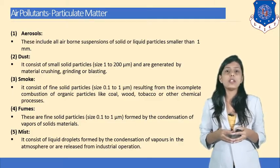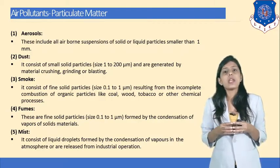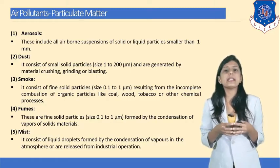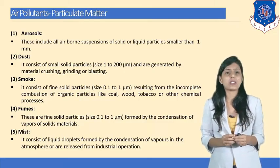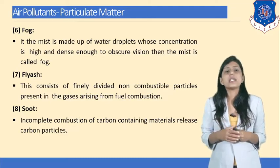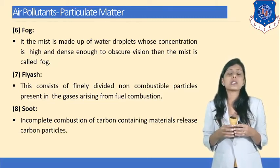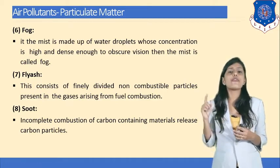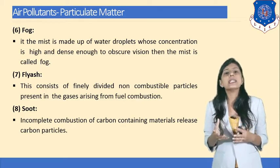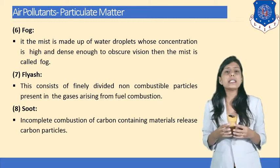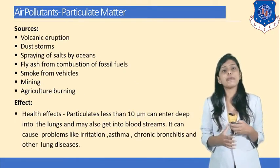Fumes are fine solid particles with size 0.1 to 1 micrometer, formed by the condensation of vapors of solid materials. Mist consists of liquid droplets formed by the condensation of vapor in the atmosphere, released from industrial operations. When the concentration of mist is high and dense enough to obscure vision, it is called fog. Fly ash consists of finely divided non-combustible particles present in gases arising from fuel combustion. Soot is released from the incomplete combustion of carbon-containing materials as carbon particles.